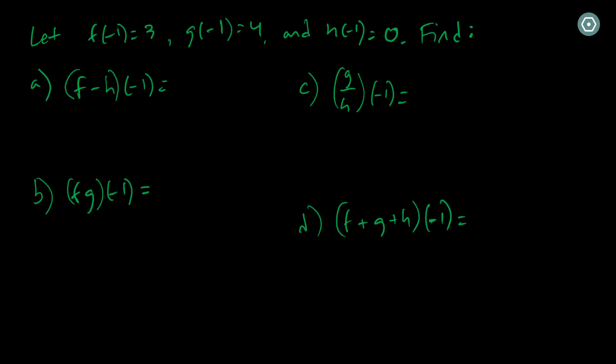And based off that, I want to find these values. For example, part a, I want to know what f minus h of negative 1 is. Well, based off my definitions, all I need to calculate then is f of negative 1 minus h of negative 1. So in this case, that's going to be 3 minus 0, which just results in 3.